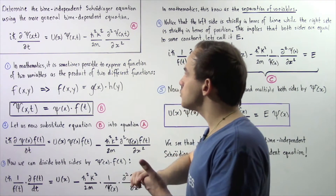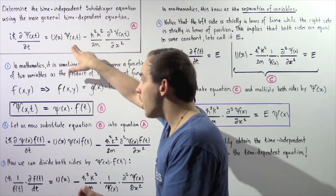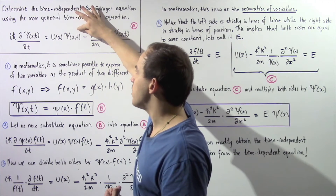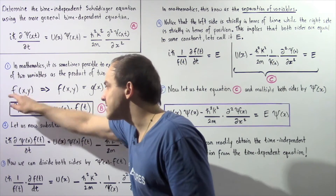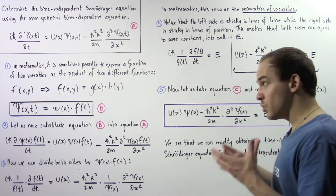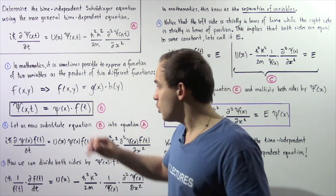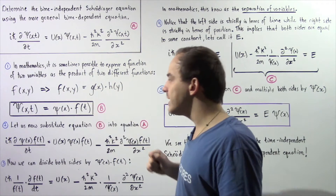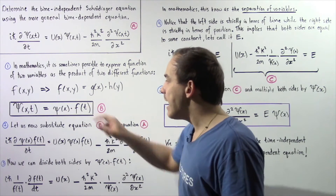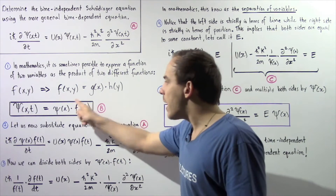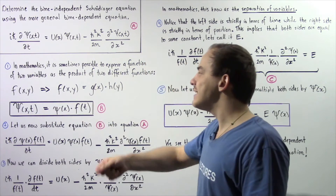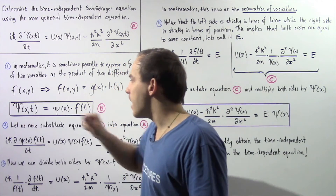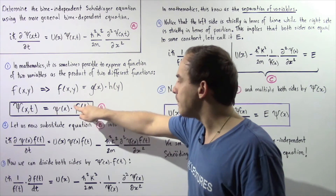Let's examine our wave function. The wave function is a function of two different variables — in this case, x and time. So capital psi is with respect to x and t. That means sometimes it must be true that this equals the product of two different functions: lowercase psi, which is a function of simply x, and f, which is a function of simply t. So f is independent of x, and lowercase psi is independent of t. Let's call this equation B: capital psi(x, t) = lowercase psi(x) multiplied by f(t).